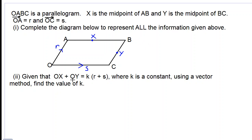Let's move on to part 2. Given that OX plus OY is equal to k times r plus s, where k is a constant, using a vector method find the value of k. So we have to calculate the value of k.